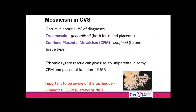Even rarer mechanisms exist where the fetus starts out trisomic from conception and there is then a rescue event that leads to mosaicism, which can lead to uniparental disomy in certain chromosomes.